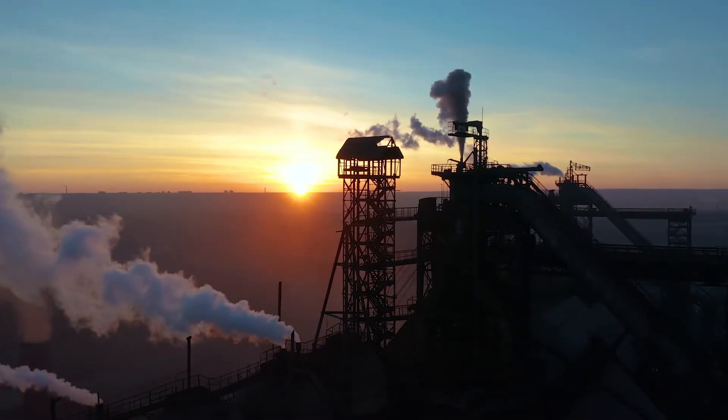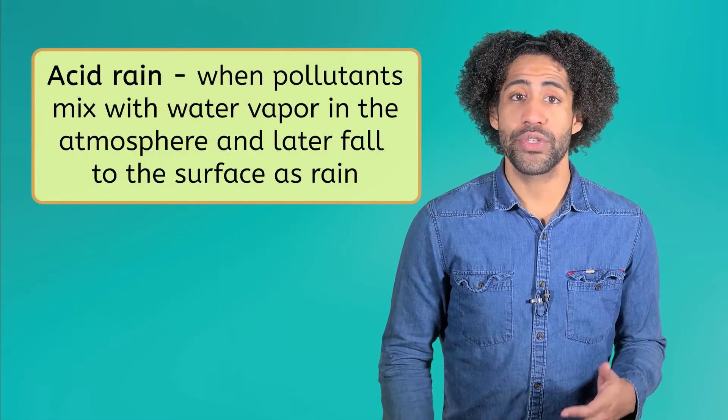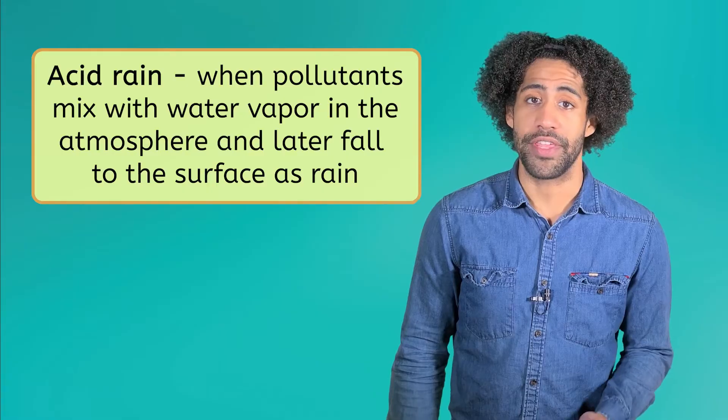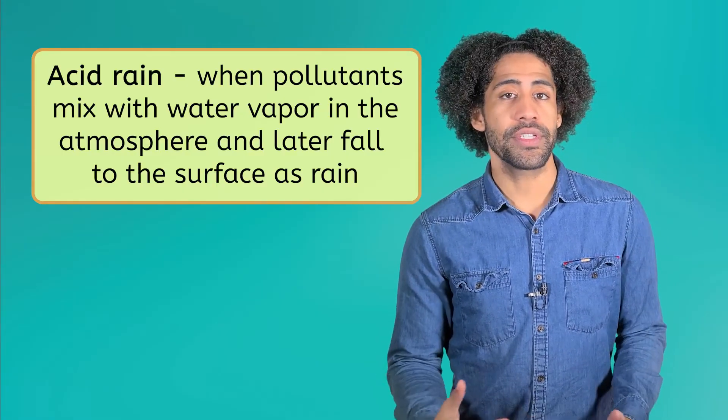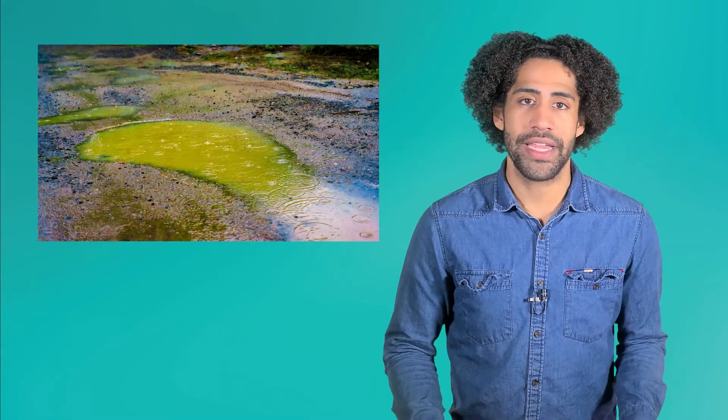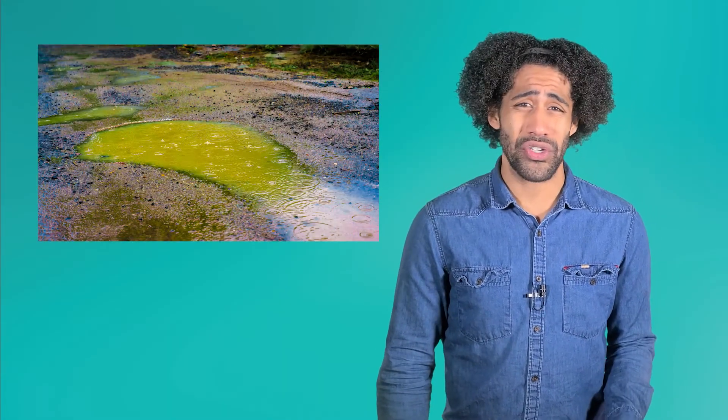I mean, would you want to breathe that stuff in? No, thank you. Air pollution can also cause acid rain, which is when pollutants mix with water vapor in the atmosphere and later fall to the surface as rain. These pollutants can then mix into the water that plants and animals need. And since these pollutants are often pretty harsh chemicals, acid rain can also damage buildings by increasing the rate of weathering.